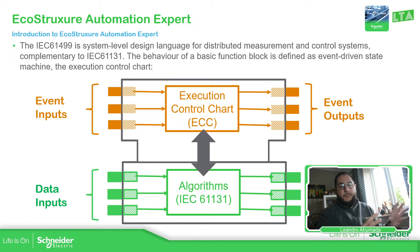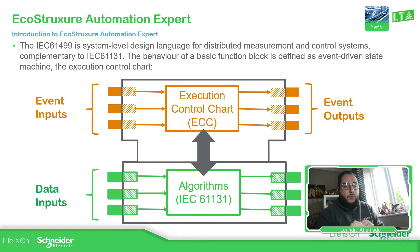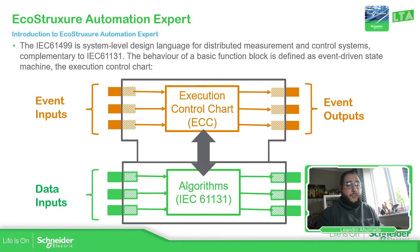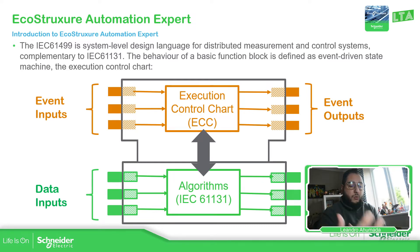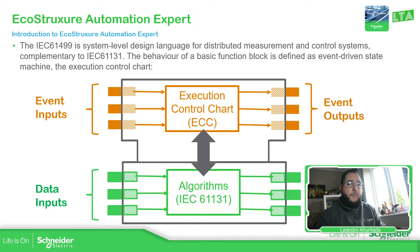This doesn't mean you can download the application from EcoStruxure Automation Expert onto an M340, M241, or other standard PLCs — it requires specific CPUs. We have the M580 D-Pack and the M251 D-Pack for that, but we can also deploy the code to a laptop or a Raspberry Pi — code that we've already built in EcoStruxure Automation Expert.